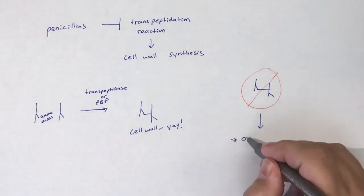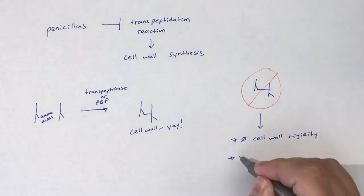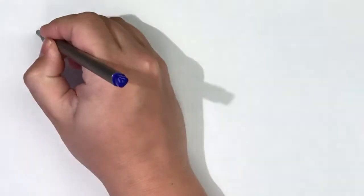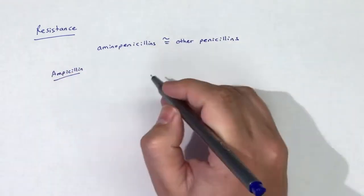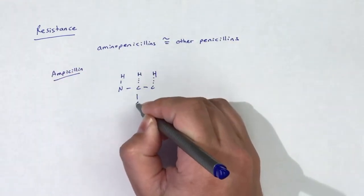For more review on this mechanism of action, please review the video on penicillins. Resistance to aminopenicillins is very similar to other penicillins and includes susceptibility to beta-lactamases.